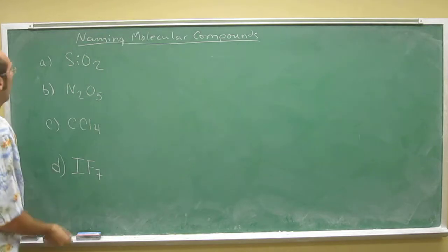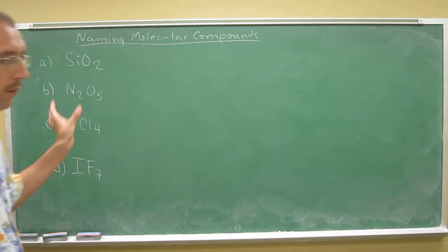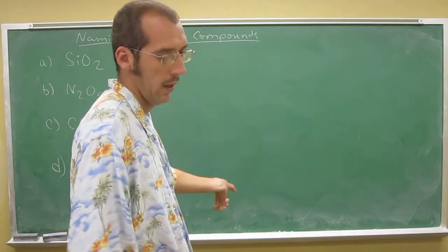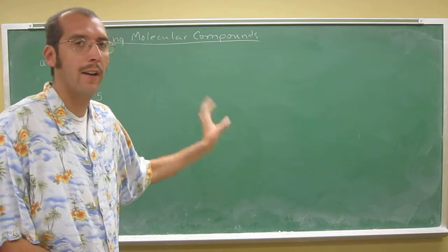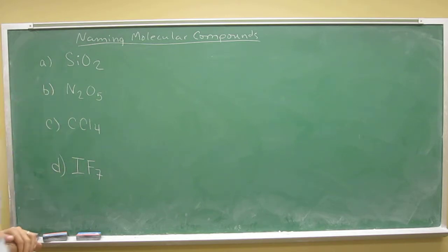Remember with ionic compounds, you just say the names of the two ions and then drop the ending of the anion and put I-D-E. But with covalent compounds, you've got to tell the number of the actual atoms in there. So let's try some of these covalent compounds or molecular compounds.